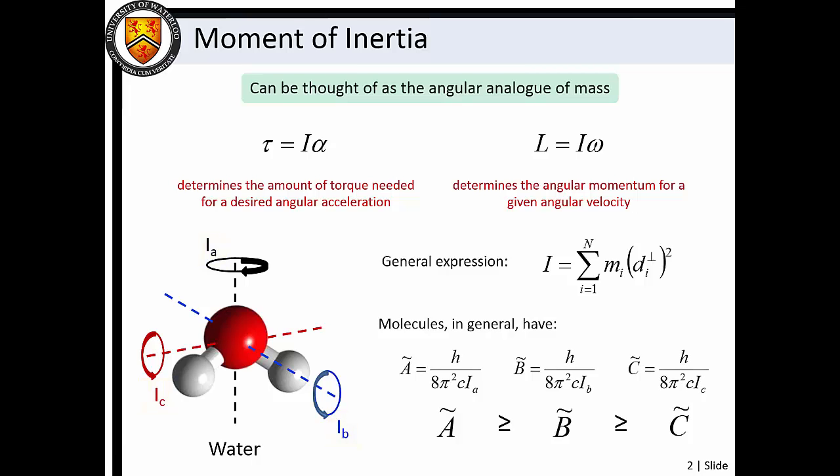This then allows us to define molecular rotational energy level structure in terms of three inertial rotational constants, A, B, and C.